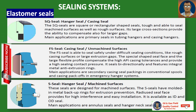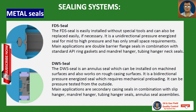Metal seals are of two main types: FDS seal and DWS seal. The FDS seal is easily installed without special tools and can also be replaced easily if necessary. It is a unidirectional pressure-energized seal for mid-to-high pressure with only small space requirement. Main applications are double barrier flange seals in combination with standard API ring gaskets, and mandrel hangers, tubing hangers and neck seals.